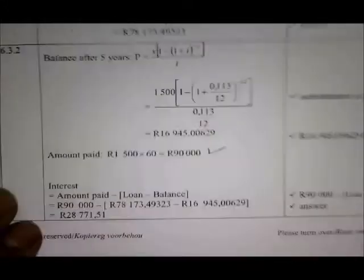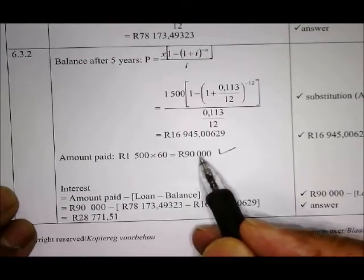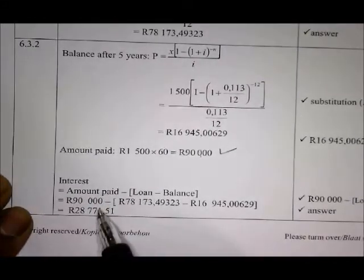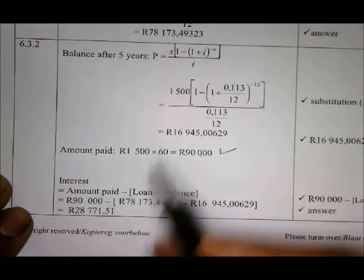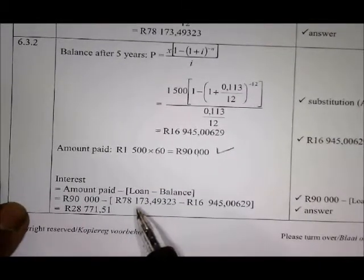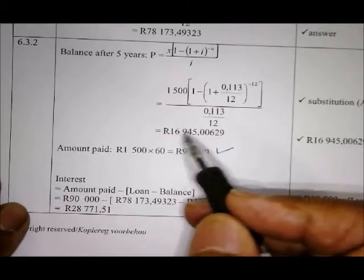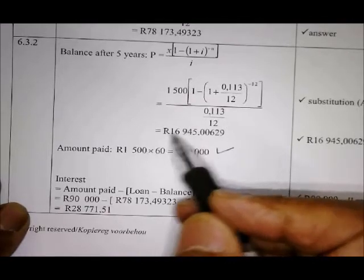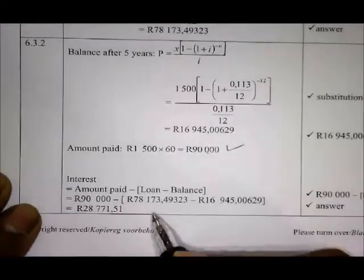And then what you do next is then, once you have those 2 values, you take this 90,000, and subtract the 78 we've worked out here for 5 years, remember? 5 years, and minus this one for 1 year. Subtract both values, and there you are. That answer should be the final answer. A bit of a tricky one, I know, not that easy.